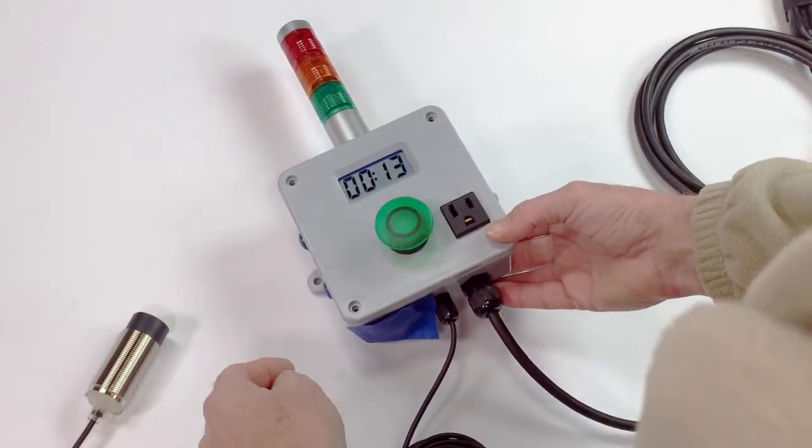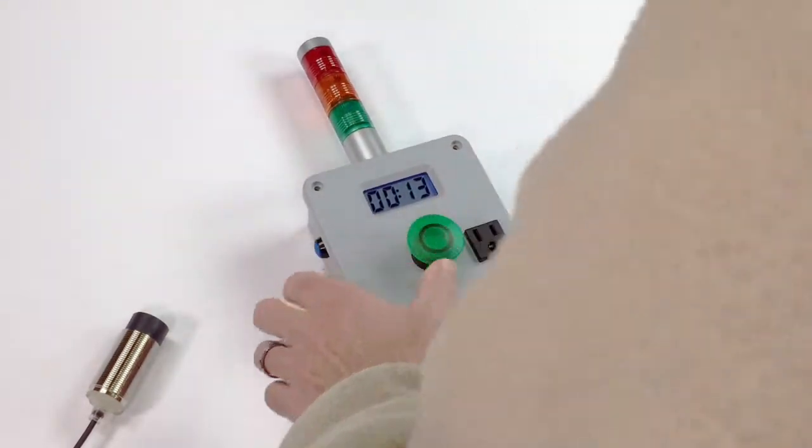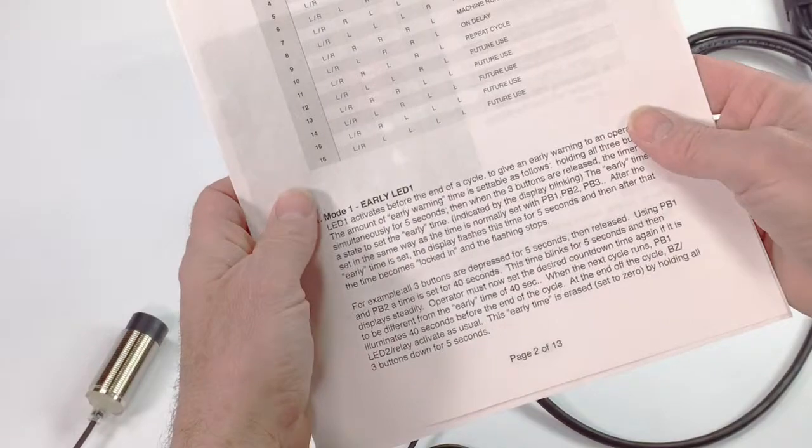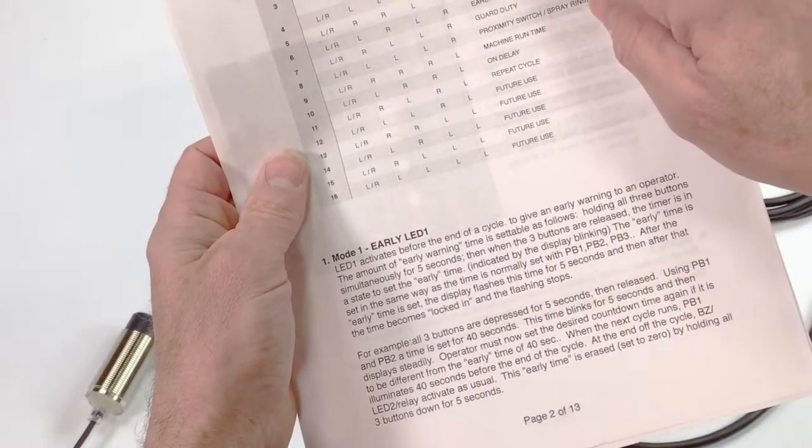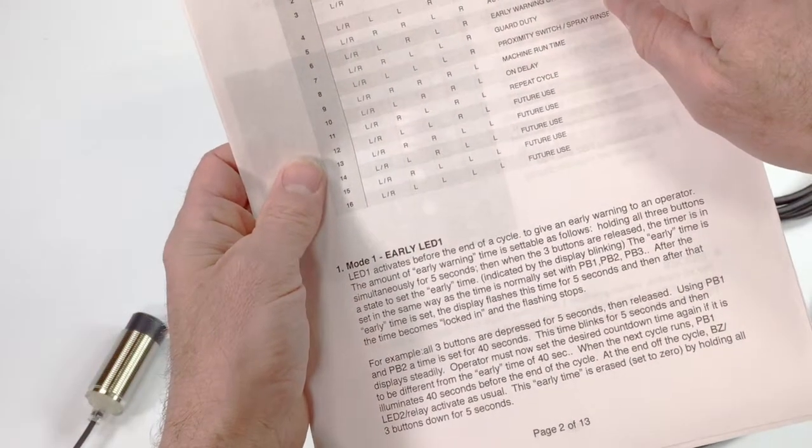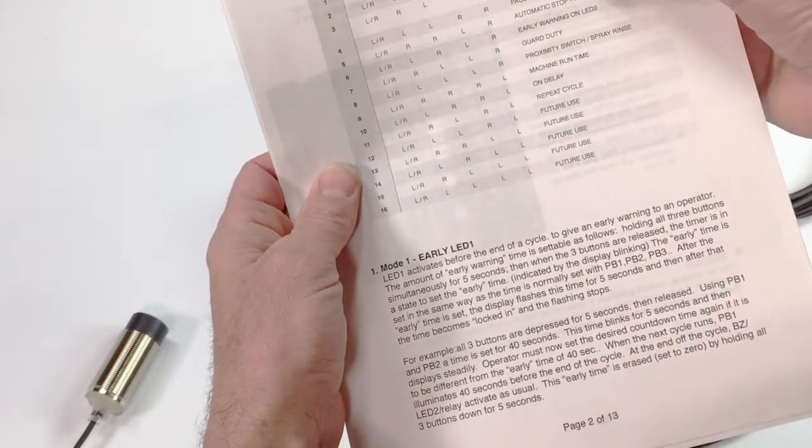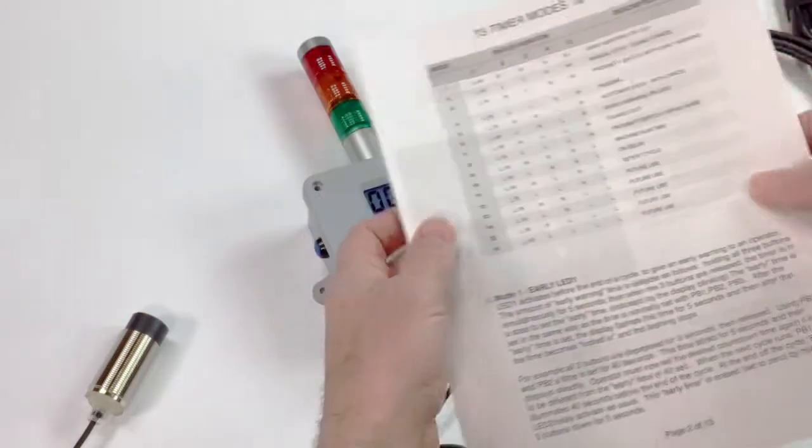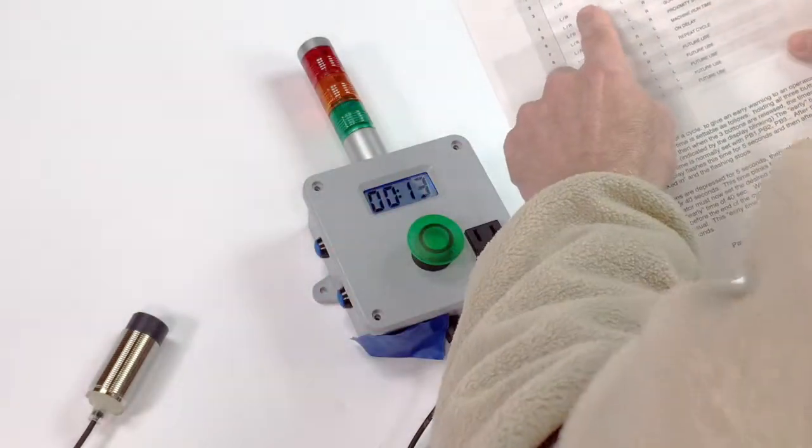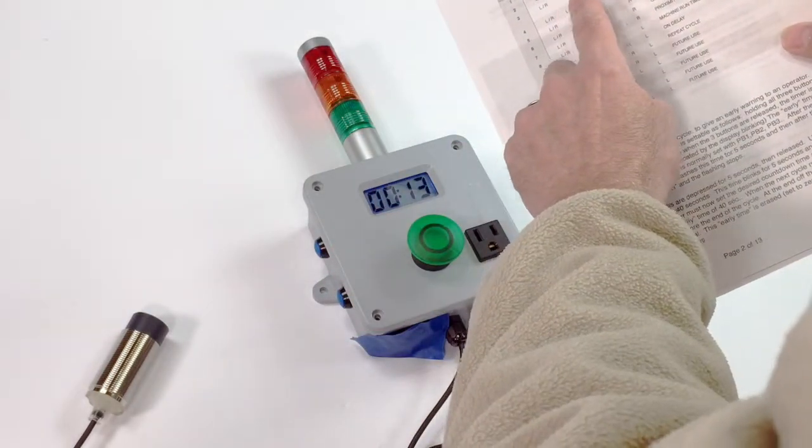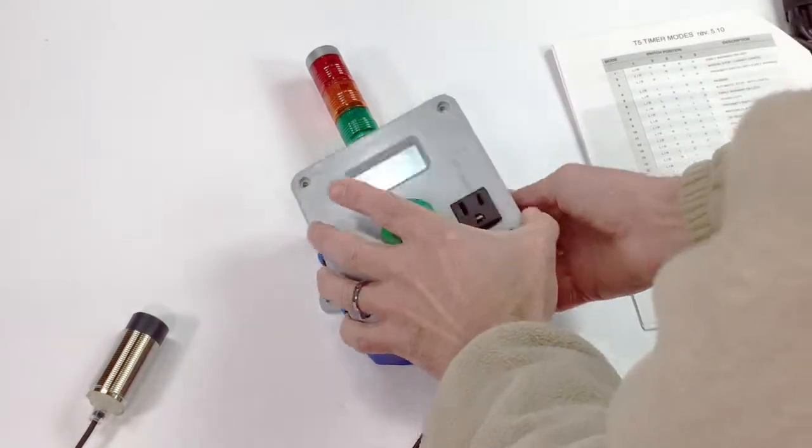Looking at the mode chart, the proximity sensing proximity switch can be used in mode 3 or 8, which I'll get to in another video. But for right now we're going to show you mode 3. The dip switch is right, left, right, right.